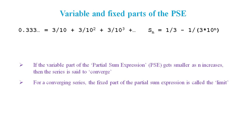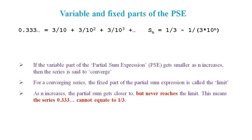For a converging series, the fixed part of the partial sum expression is called the limit. And so here the fixed part, which is 1/3, is the limit of our series. As n increases, the partial sum gets closer to but never reaches the limit. This means the series 0.3 recurring cannot equate to 1/3.